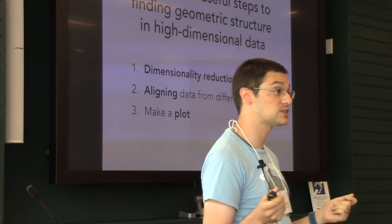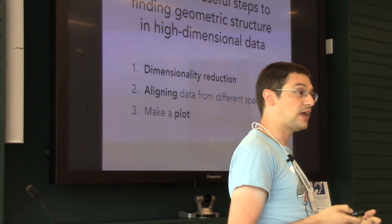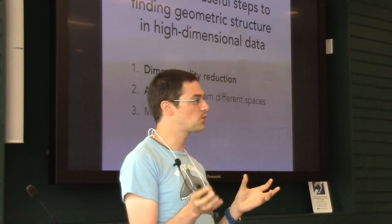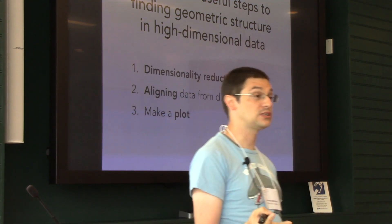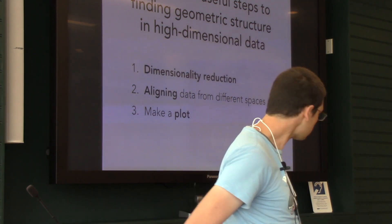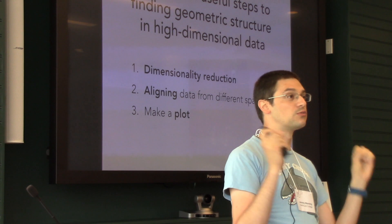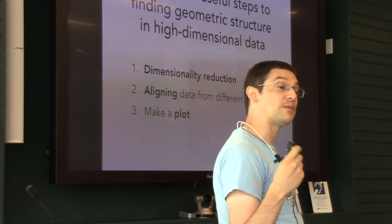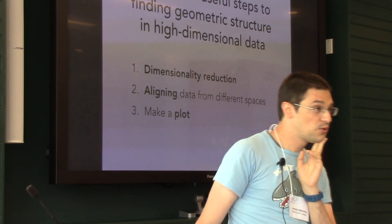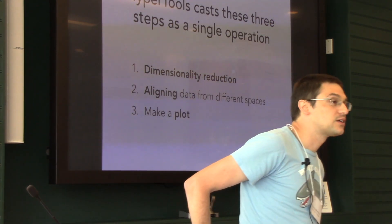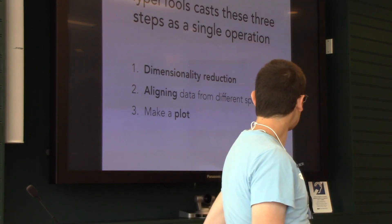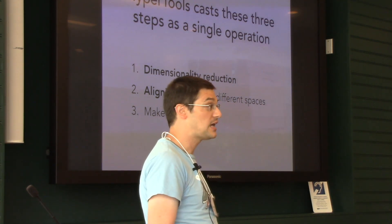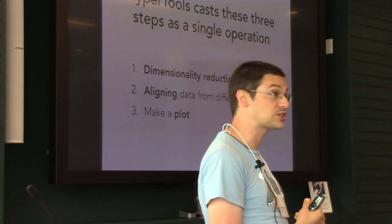There are various tools like hyperalignment and the shared response model, which is a probabilistic version of hyperalignment, that align these otherwise incompatible spaces. Once you've reduced your data and aligned all your different datasets and people, you want to make a plot and visualize them. The HyperTools toolbox captures these three steps as a single conceptual operation. With one command you do these three things, letting you find visually geometric structure in your data.